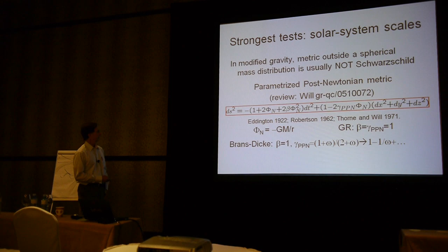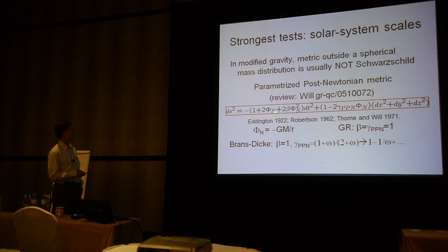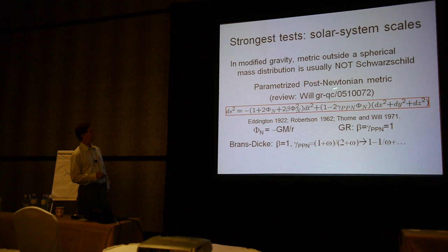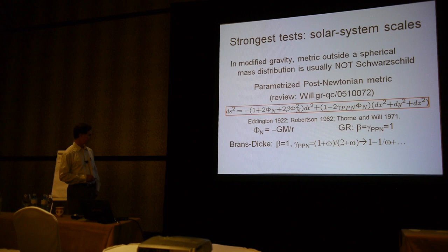If you take the Schwarzschild metric and write it in isotropic coordinates where the spatial part is flat with a conformal factor, the metric has a form where φ_N is the Newtonian potential, with coefficients β and γ—called PPN, parameterized post-Newtonian—which can be calculated in various theories of gravity. In general relativity, they both take the value of one. This non-linear term can be significant in high-precision measurements like perihelion precession.